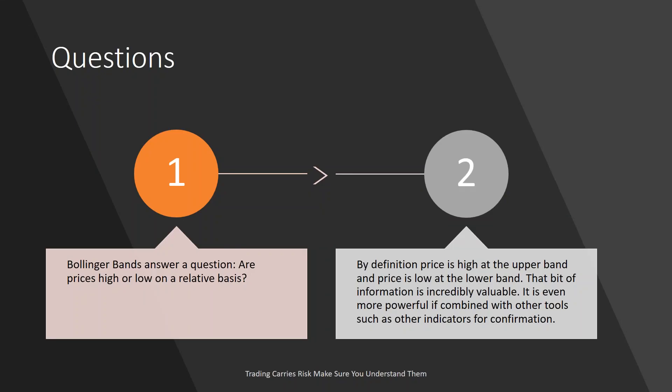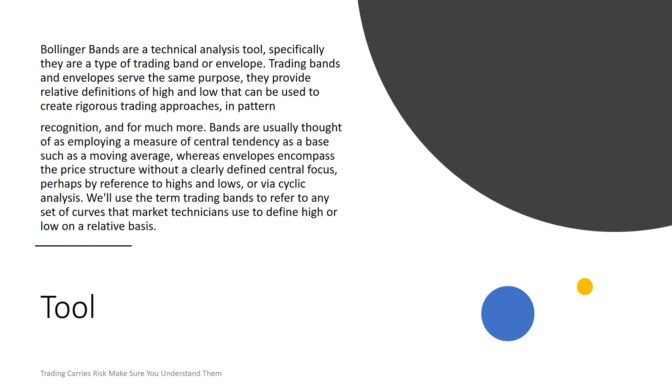You put Bollinger Bands on the chart you are using to trade from — you don't adjust your strategy to Bollinger Bands. Bollinger Bands answer a question: are prices high or low on a relative basis? By definition, price is high at the upper band and price is low at the lower band. That bit of information is incredibly valuable, and even more powerful when combined with other indicators for confirmation. Bollinger Bands are a technical analysis tool — specifically, a type of trading band or envelope.